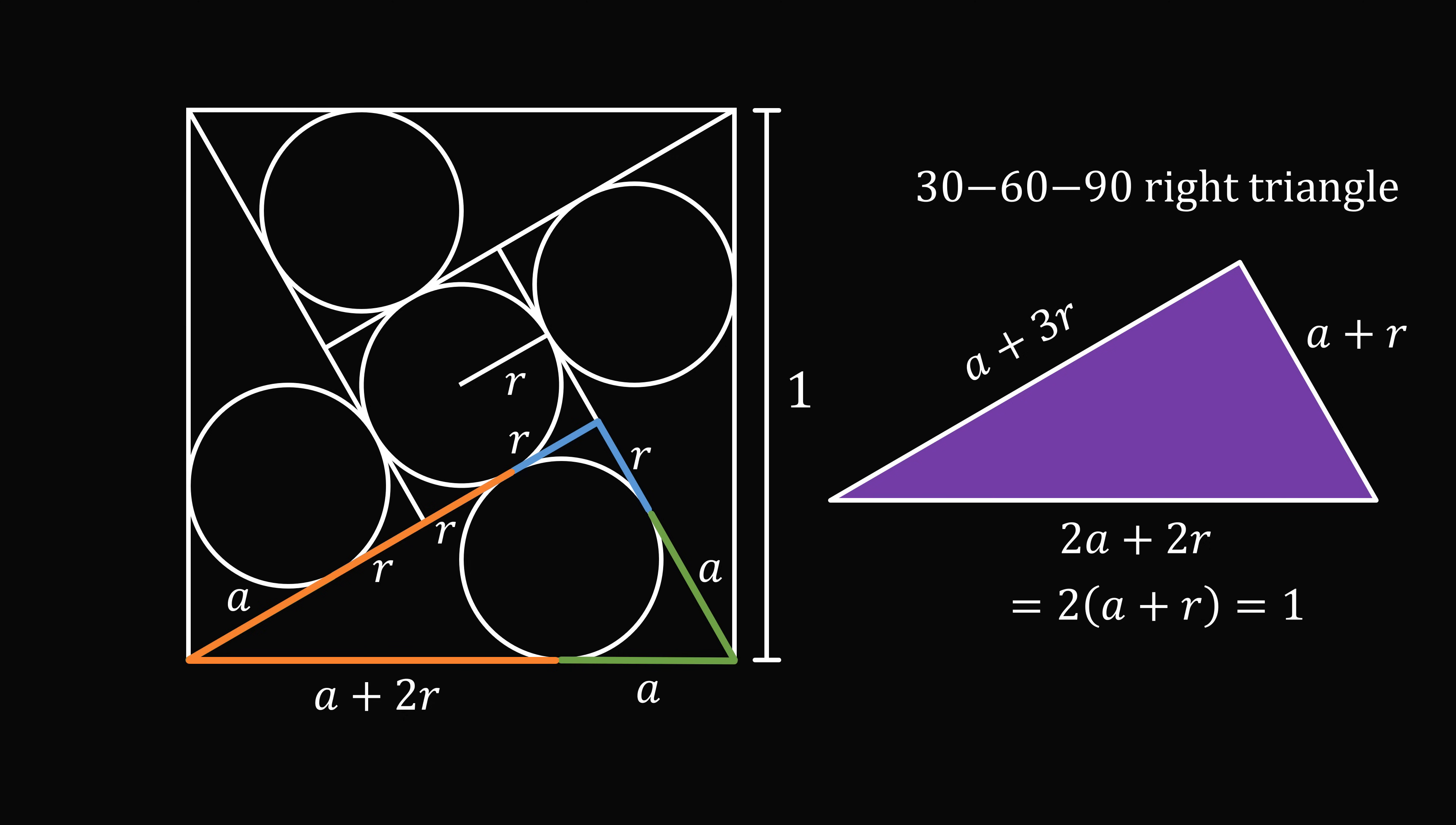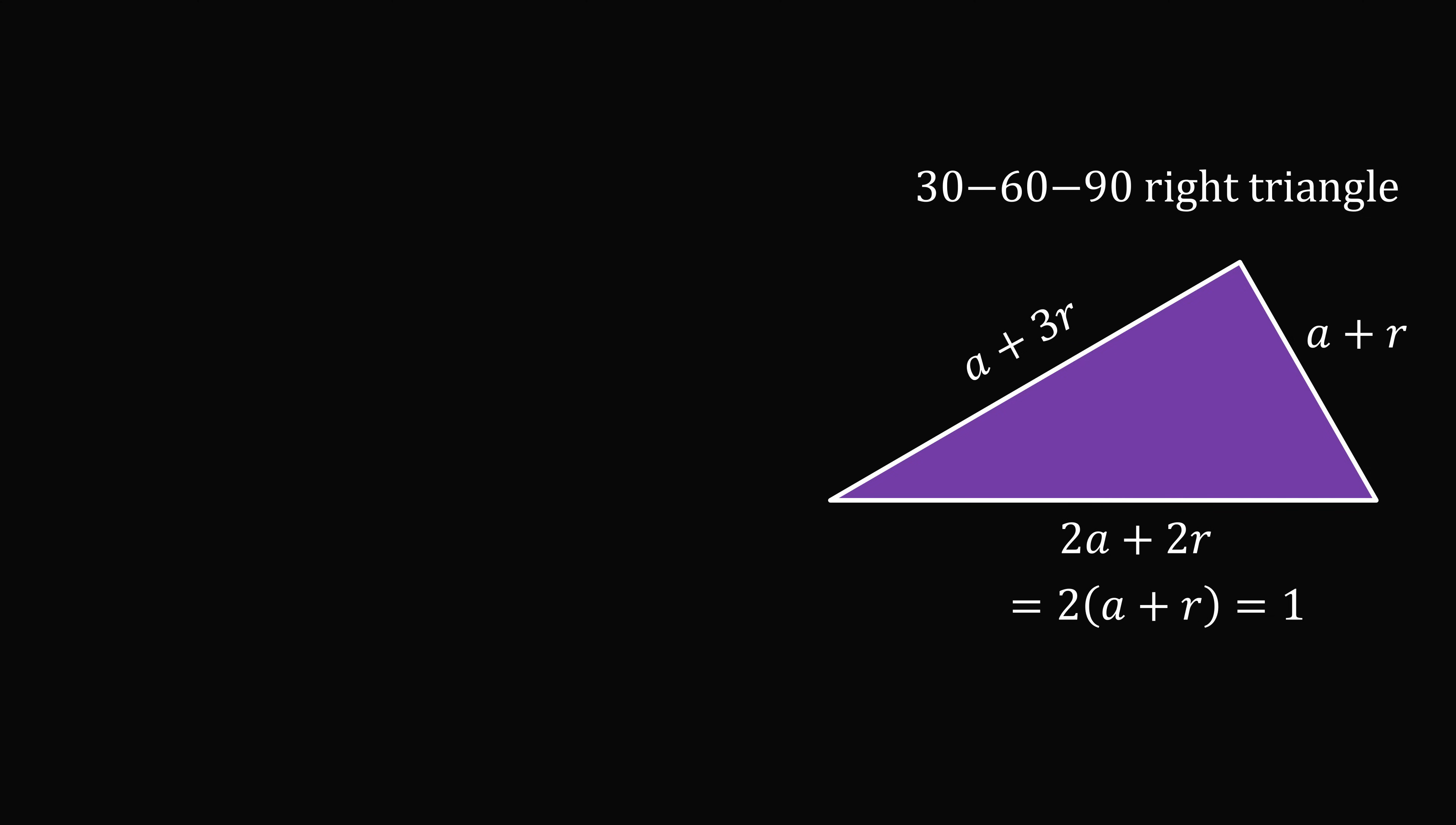So now let's just focus on this 30-60-90 right triangle. In a 30-60-90 right triangle, if the hypotenuse has a length equal to 1, the shorter leg is equal to 1 half, and the longer leg is equal to root 3 over 2. So in this triangle, the shorter leg is equal to a plus r, so we have a plus r is equal to 1 half. Then, the longer leg is equal to a plus 3r, so that's equal to root 3 over 2.